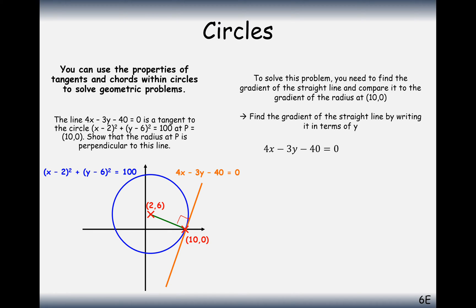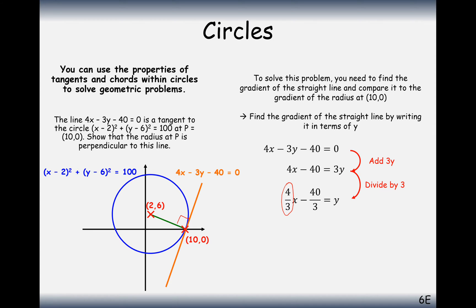To start with, we'll look at the orange line — that'll be the easiest one, because all we need to do is rearrange the equation and pick out the gradient. Rearranging to y = mx + c, 4/3 is the m value, so the gradient of the orange line is 4/3.